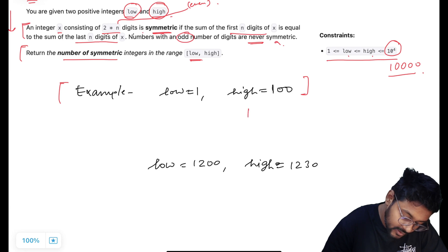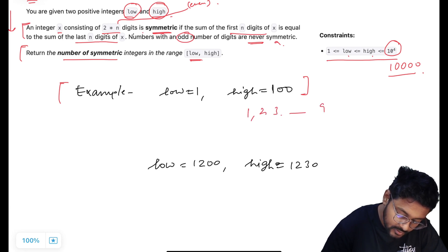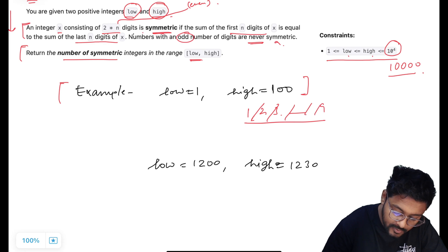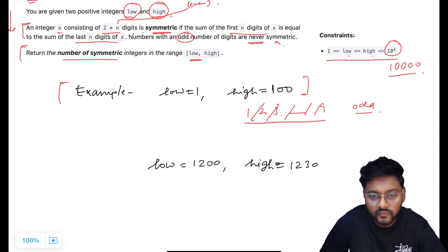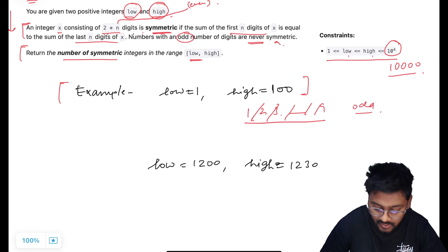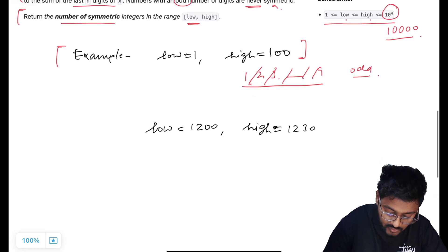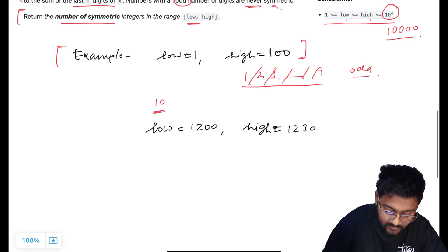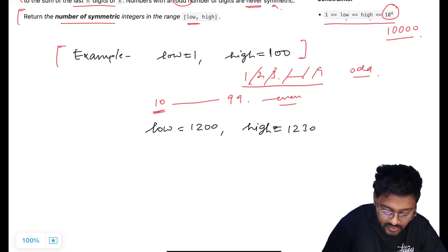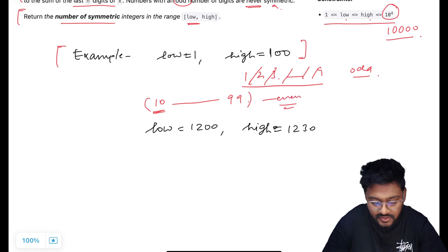If I take 1, 2, 3, 4 through 9, I'm not going to consider these numbers because they have an odd number of digits. Starting with 10, I have an even number of digits, and through 99 I have an even number of digits. So I can get answers from this range.